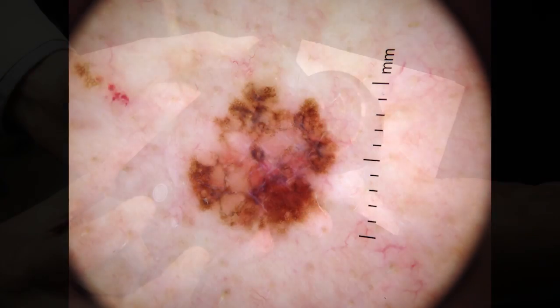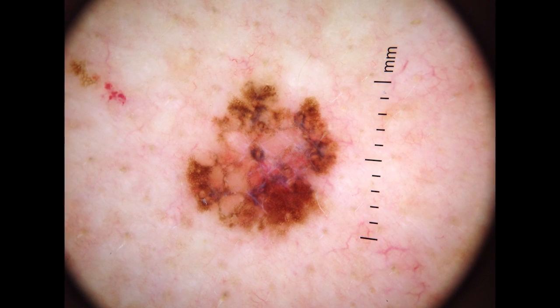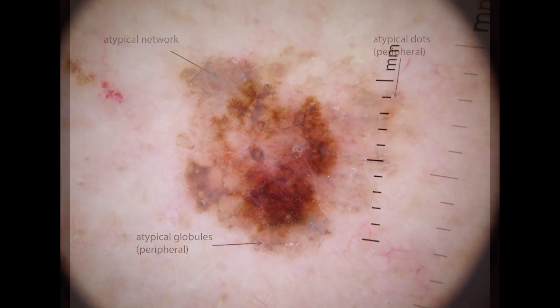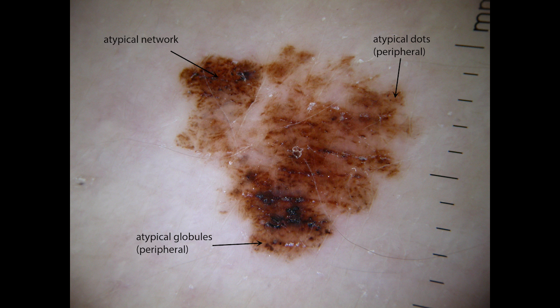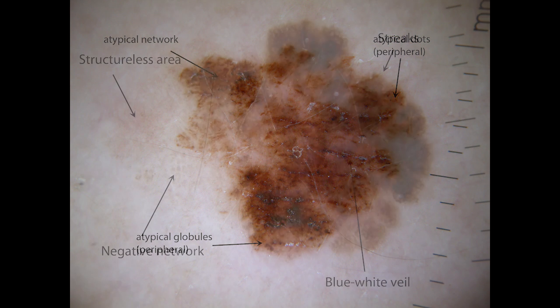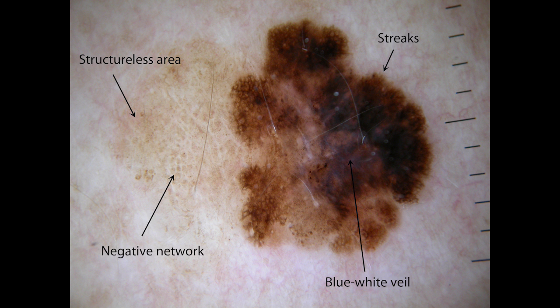Here are some examples of melanomas seen through a dermatoscope. This melanoma shows an atypical network with some atypical dots and atypical globules, both at the periphery. In this melanoma, you can see structureless areas, negative network, streaks, and a blue-white veil.